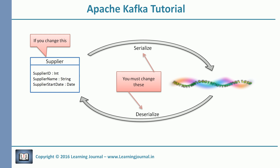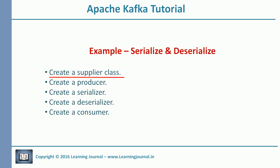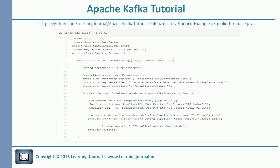For now, let's continue our discussion on this example. We completed the supplier class, serializer and deserializer class. Now we need a producer to send messages and a consumer to receive messages. There is nothing new about a producer — we have already created several producers earlier. The producer code in this tutorial is almost the same as earlier examples. I changed the value serializer class name and also changed the producer generics parameter. And finally, we are sending two messages using synchronous send.